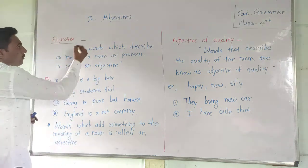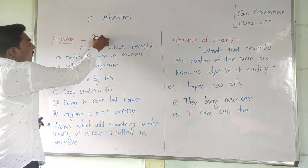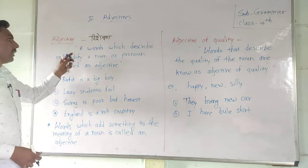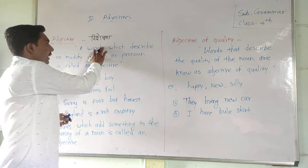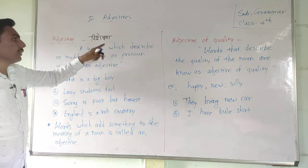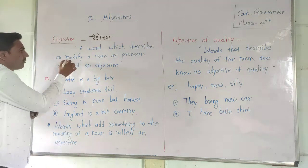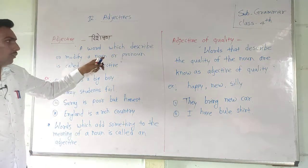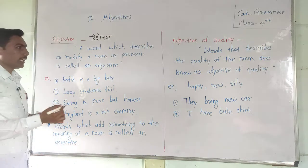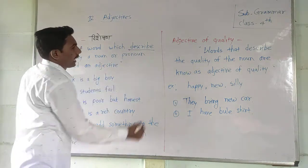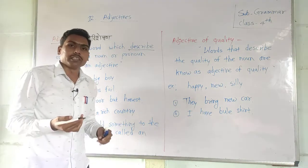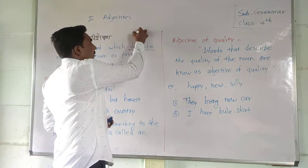A word which describes or modifies a noun or pronoun is called an adjective. To describe means to tell something about the noun — to add something or tell something about it.